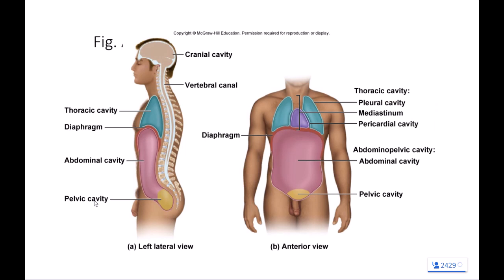When we get to A&P 2 and talk about the digestive system, there's a special membrane known as the peritoneal membrane or the peritoneum — that's old language that hasn't been phased out yet. Here are some pictures reinforcing those cavities: within the thoracic cavity, the pleural cavities are shown in teal, the pericardial cavity in purple, and the mediastinum is the space in between the teal pleural cavities. The abdominal pelvic cavity can be broken up into the pink abdominal and the yellow pelvic cavities. The diaphragm is not a cavity — it's a dividing landmark separating the thoracic from the abdominopelvic cavities.